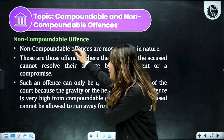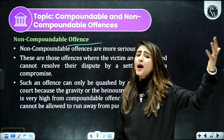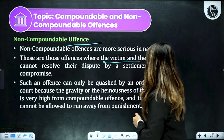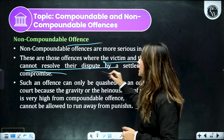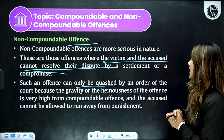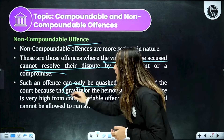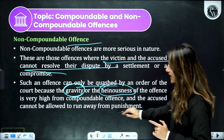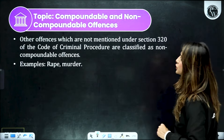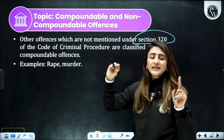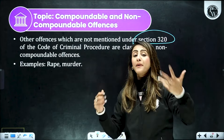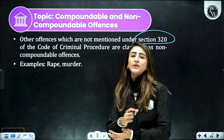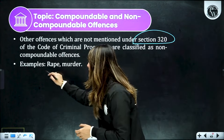Iske baad aajate hain non-compoundable offenses — matlab ye aapke bahut hi serious, heinous level ke offenses hain jahaan par aisa compromise ho hi nahi sakta — saza hi milegi. Non-compoundable offenses mein victim and accused cannot resolve and cannot do a compromise. Such an offense can only be quashed by an order of the court, because the gravity — kyunki yahaan par offense ki jo gravity hai, jo matter ki seriousness hai, heinousness kaafi zyada hoti hai — isi liye yahaan par punishment se bacha nahi ja sakta. Other offenses which are not mentioned in section 320 — toh 320 CrPC mein list mention hai ki konse offenses mein compounding possible hai. Jo offenses 320 CrPC mein mention nahi hain, automatically woh non-compoundable offenses ki category mein jayenge. A few examples are rape, murder, etc.